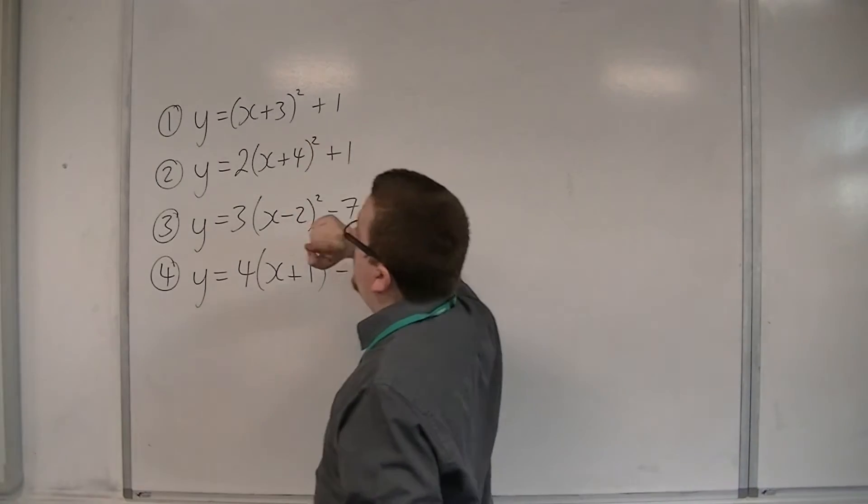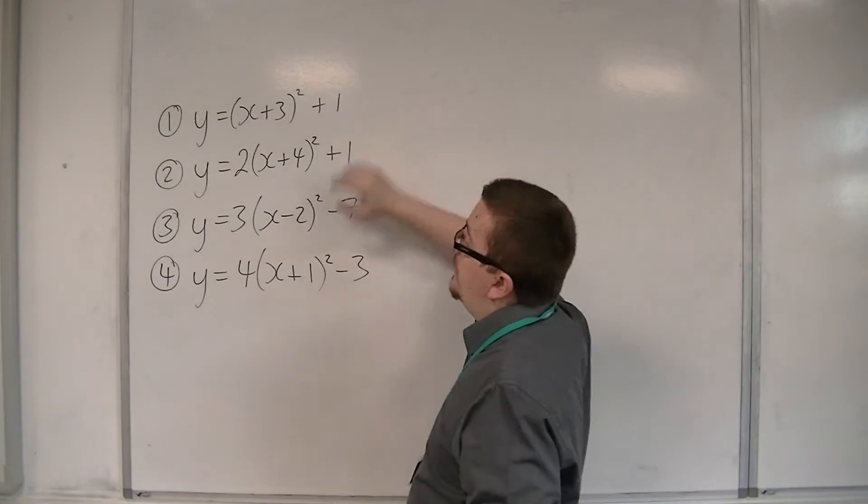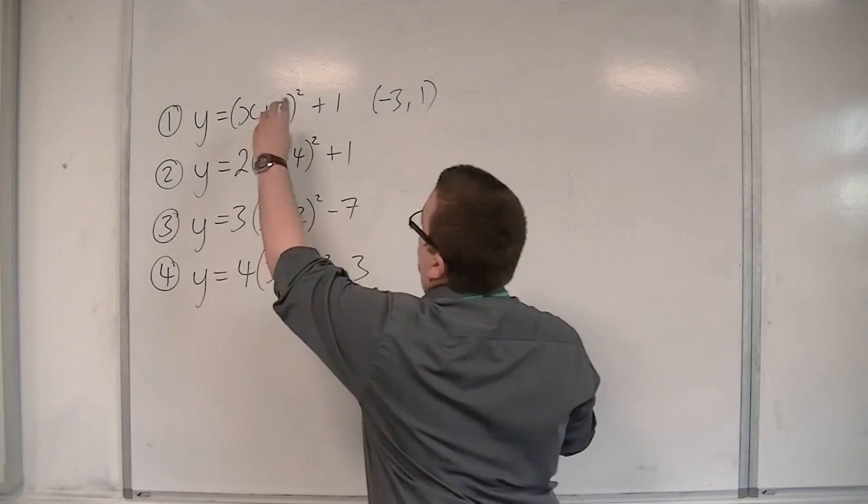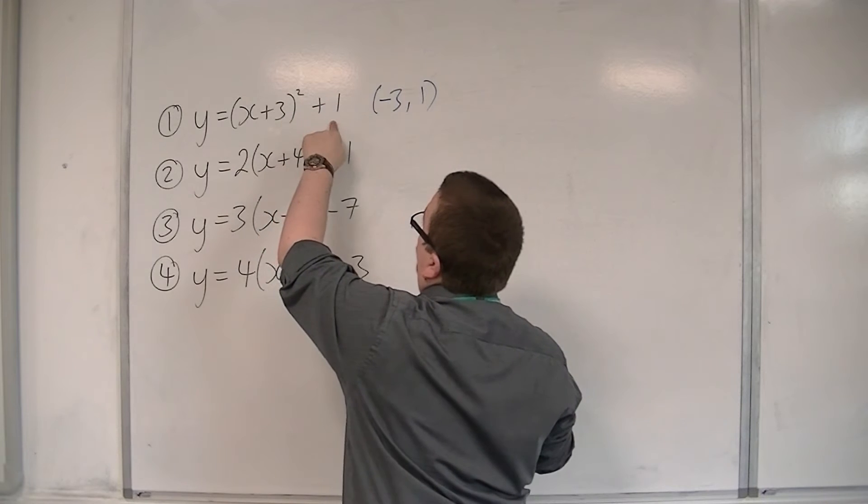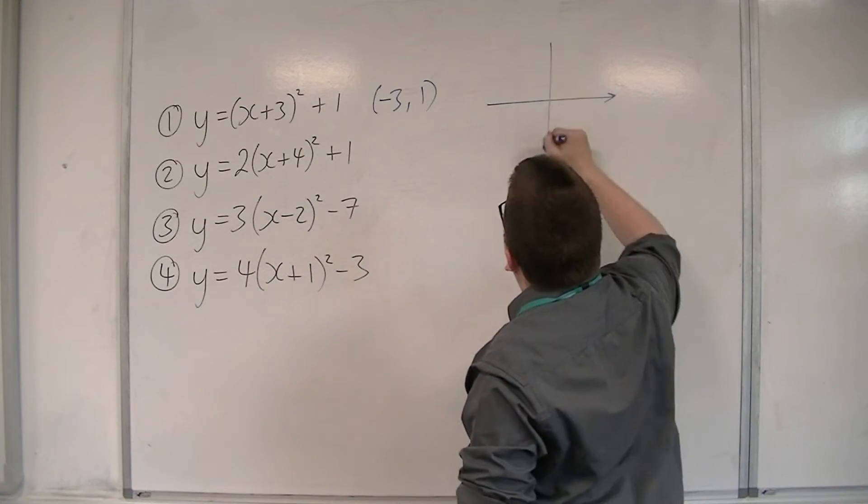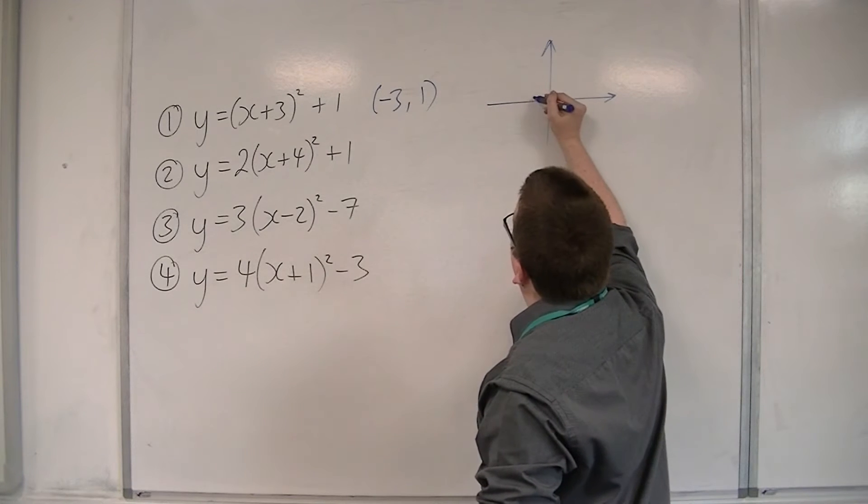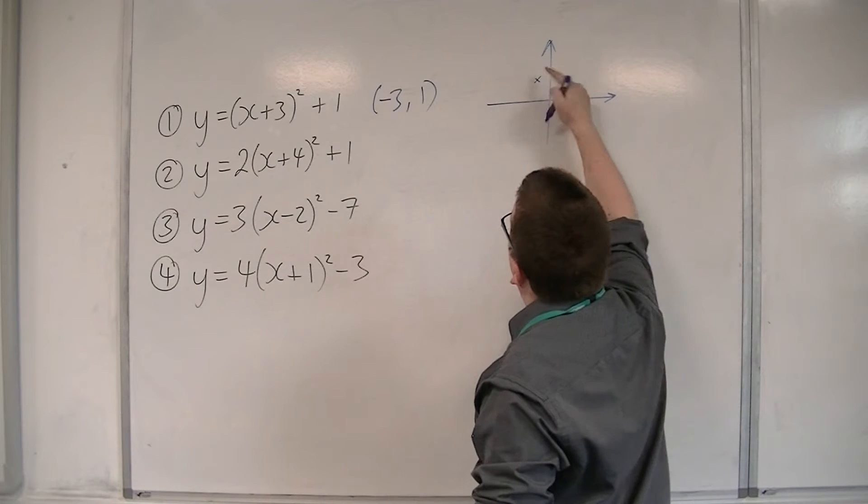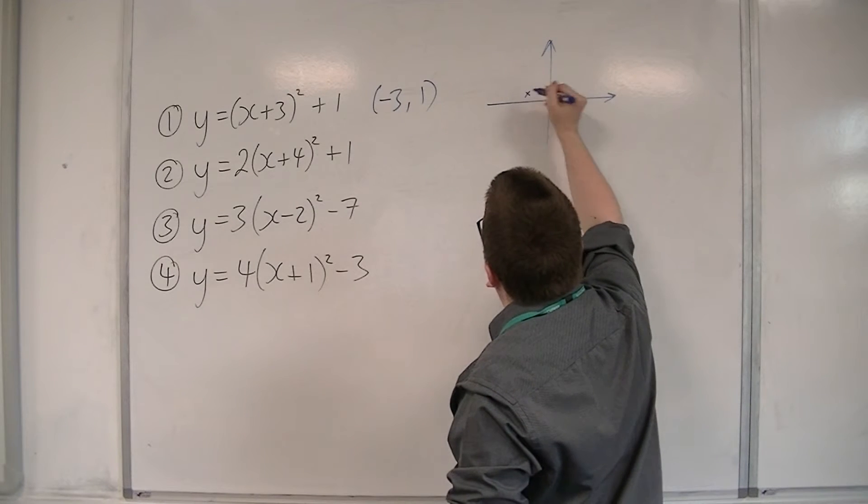So for this first one, I can read off the coordinates of the vertex as minus 3, 1. That number changes sign, that one stays the same. So this curve has a vertex at minus 3, 1, so roughly about there, or rather, more likely there.